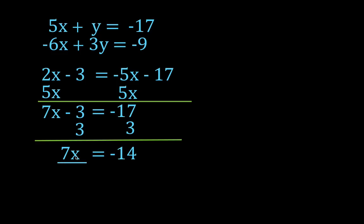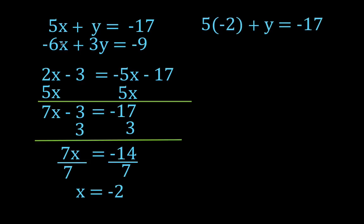I divide both sides of the equation by 7 — the value in front of x — and get that x equals minus 2. Now we have the x value: it's minus 2. We can take this minus 2 and substitute it into either equation to solve for y. I'm going to use the first equation because there's no negative sign, which makes it a little less complicated.